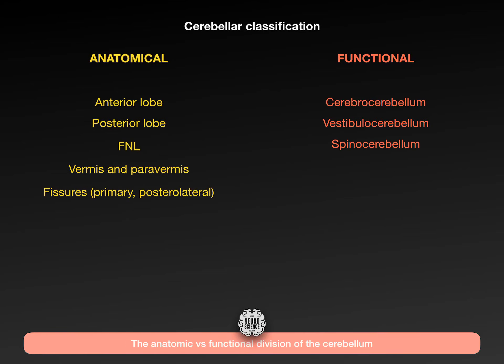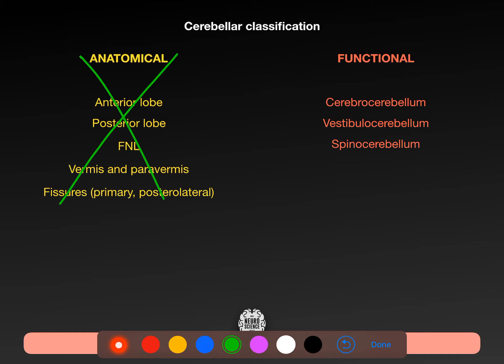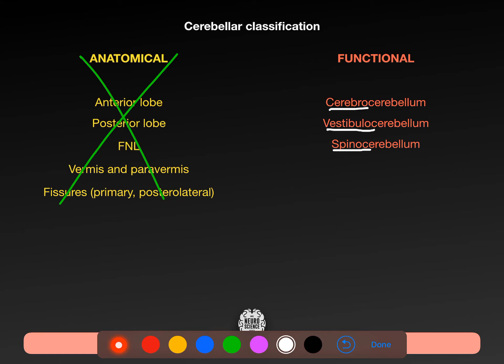Now to functional divisions. We have cerebrocerebellum, vestibulocerebellum, and spinocerebellum. Thank you, neuroscientists, for how logically you've named these - because it tells us at a glance what each does, what it's connected to, and where we're going.